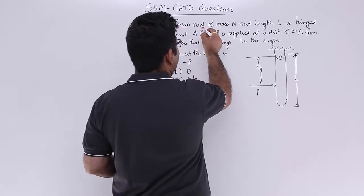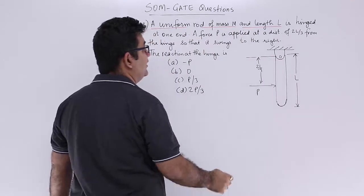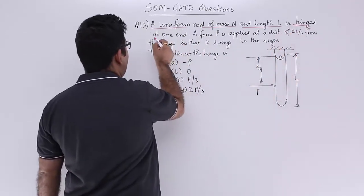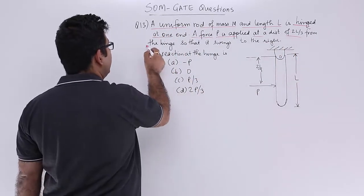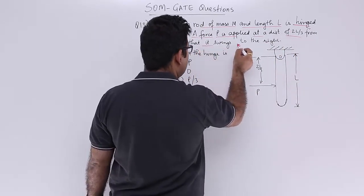you have a uniform rod of mass M and length L. It is hinged at one end. A force P is applied at a distance of 2L by 3 from the hinge so that it swings to the right.